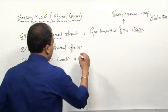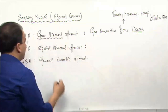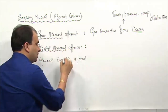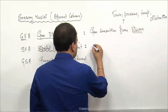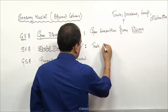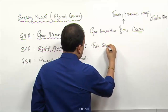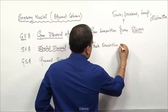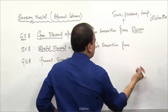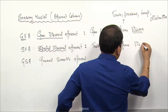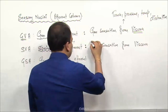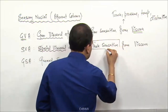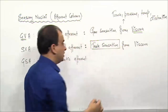Special visceral afferent column - the word itself is suggesting 'special visceral.' The special sensation we are talking about here is taste. Taste sensation is only from the viscera. So taste sensation from the viscera - the only special sensation we are considering here is taste.